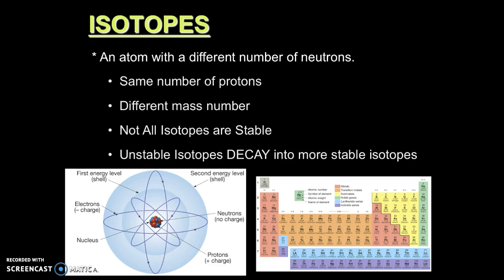An isotope is an atom with a different number of neutrons and the same number of protons. This gives isotopes a different mass number, and the important thing to note is that not all isotopes are stable. Unstable isotopes decay into more stable isotopes. What's actually happening is that the unstable bonds between the protons and the neutrons causes the nucleus to start to spontaneously decay, and it will decay in different ways.